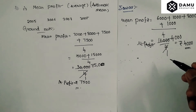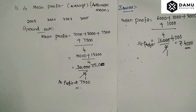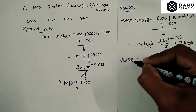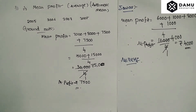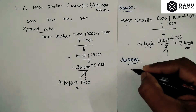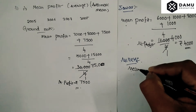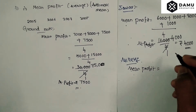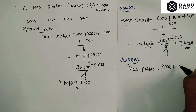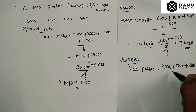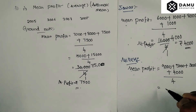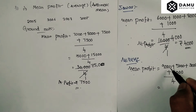Next, for millets. We have to calculate the mean profit. Mean profit will be equal to nine thousand plus five thousand plus three thousand plus four thousand, whole divided by four.